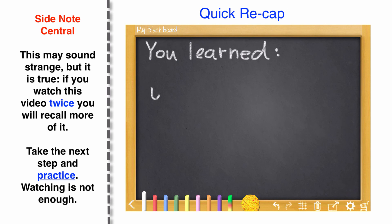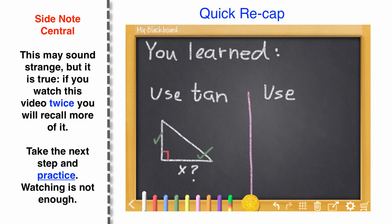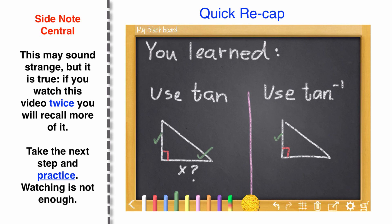We are done with this video. You learned how to use tangent and inverse tangent. Recall: tangent is used when you have an angle measure and a side length and need to find a missing side length. Inverse tangent is used when you have two sides of the triangle and need to find the angle measure. Thanks so much for watching — we'll see you next time.